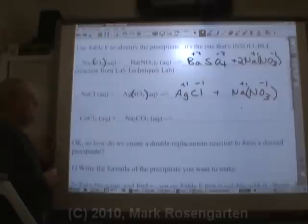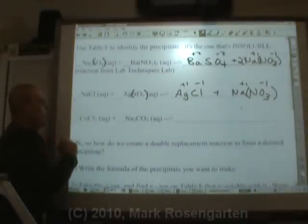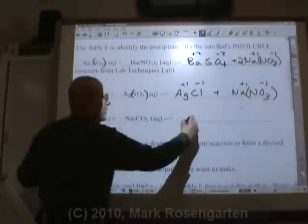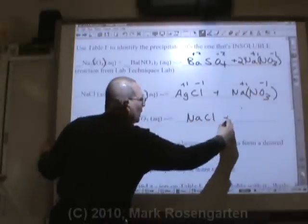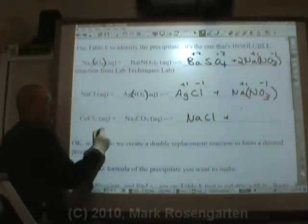For the last example here, the cobalt and the sodium will trade places. So instead of being cobalt chloride, it'll be sodium chloride. And instead of sodium carbonate, it'll be cobalt carbonate.